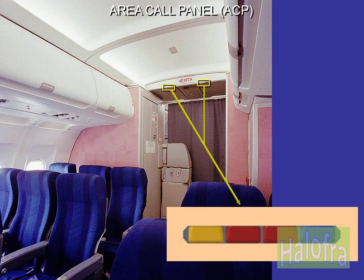The area call panel, ACP, indicates crew calls in pink steady or flashing, passenger call in blue steady, lavatory call in amber steady, and lavatory smoke detection in amber flashing. The ACPs are installed in the cabin ceiling at both ends of the passenger compartment.